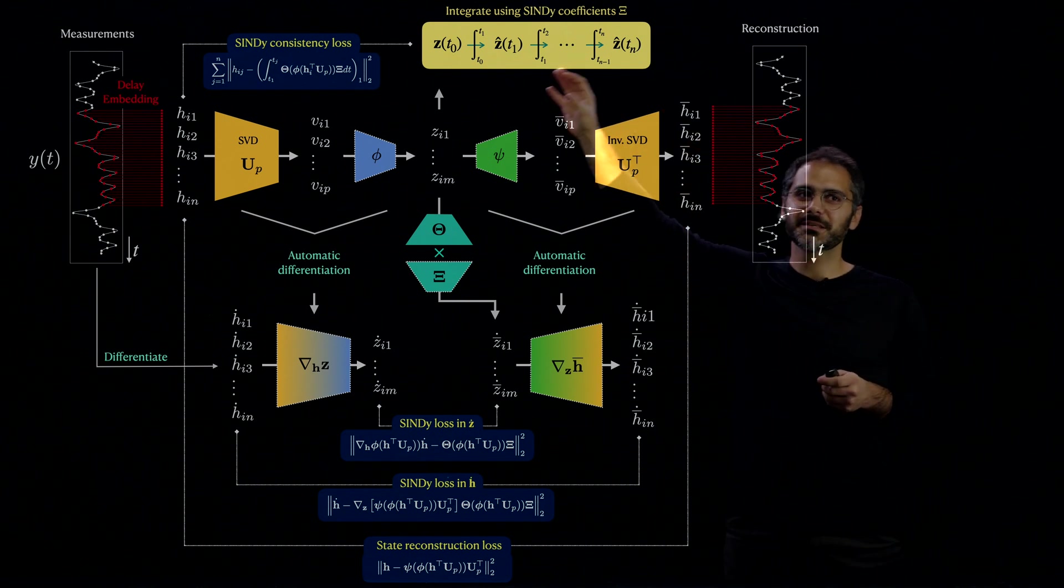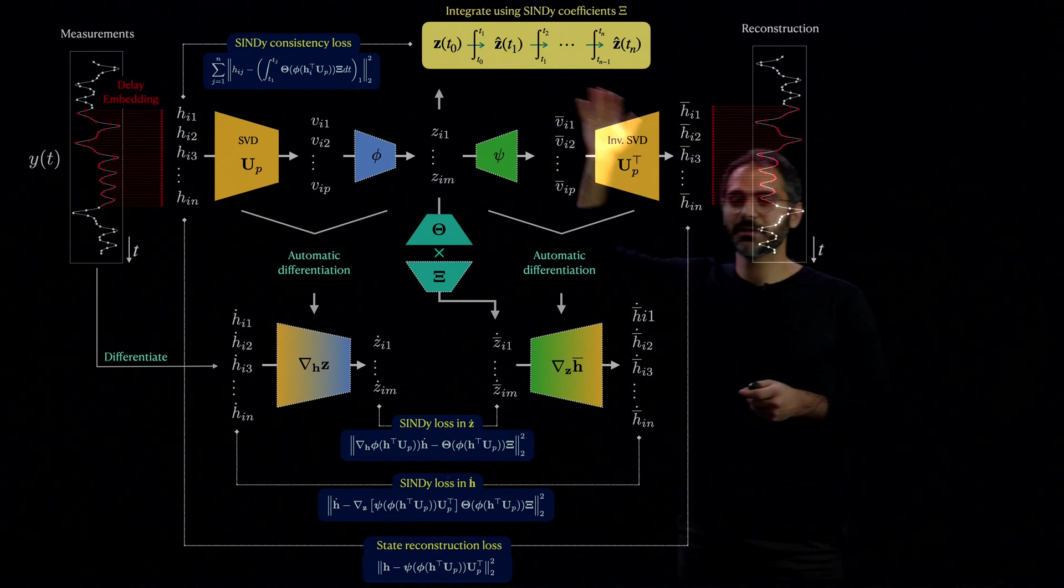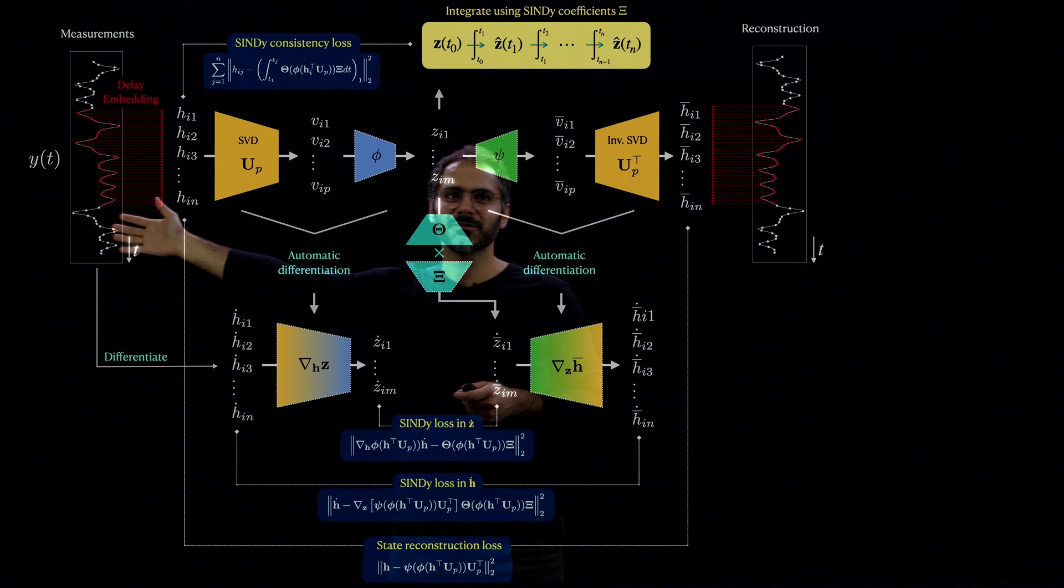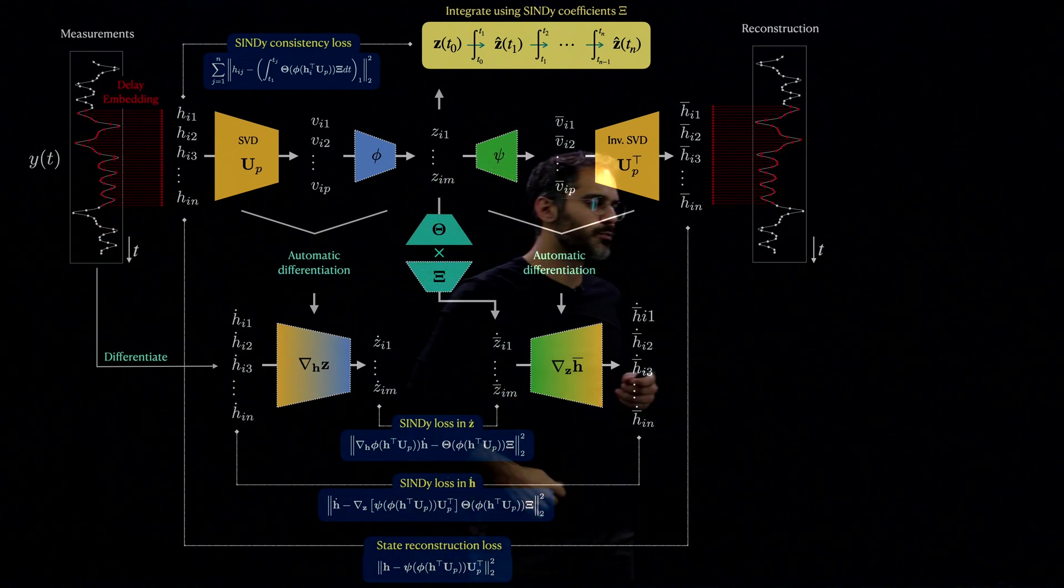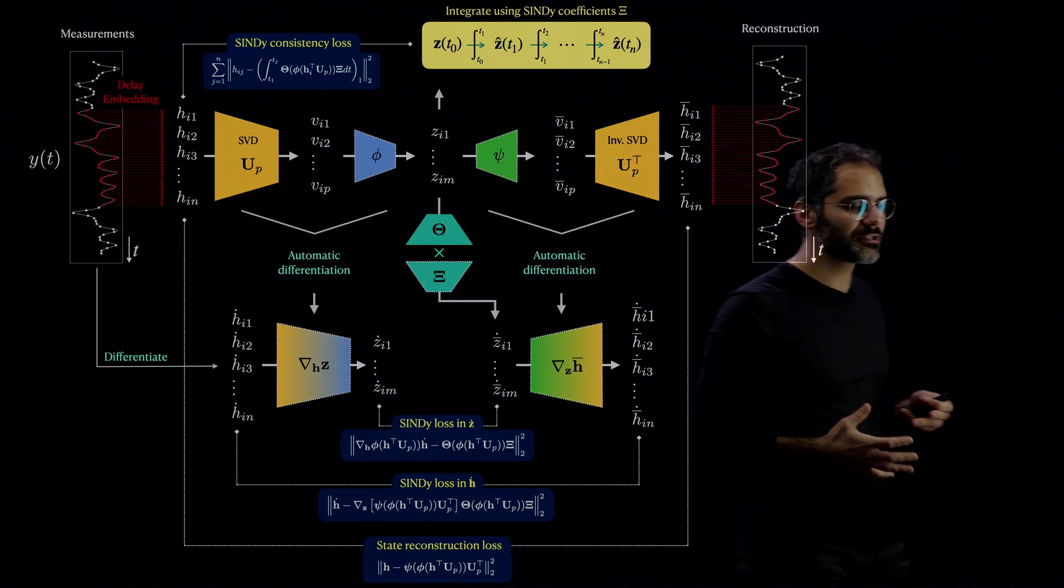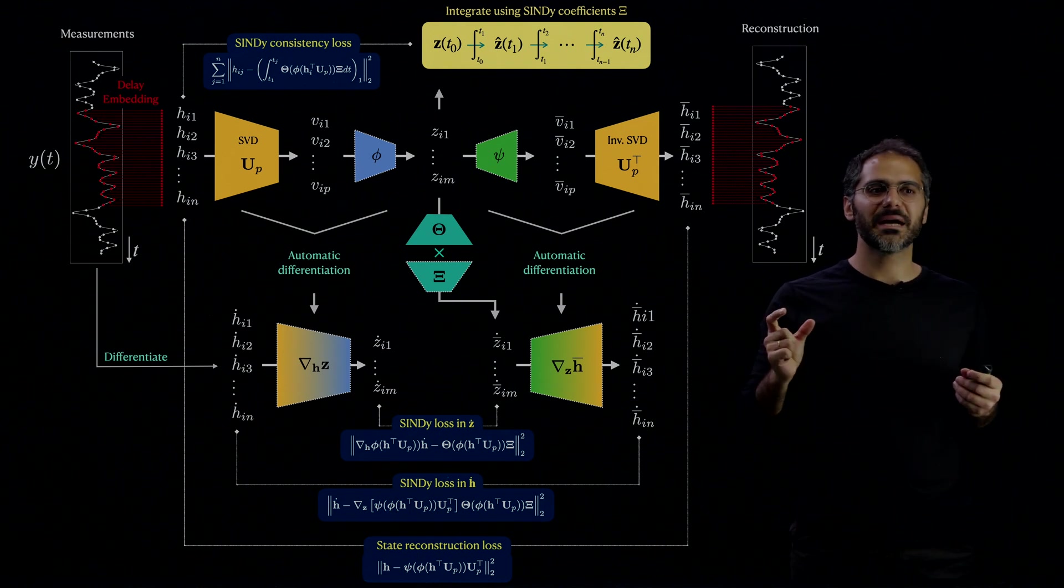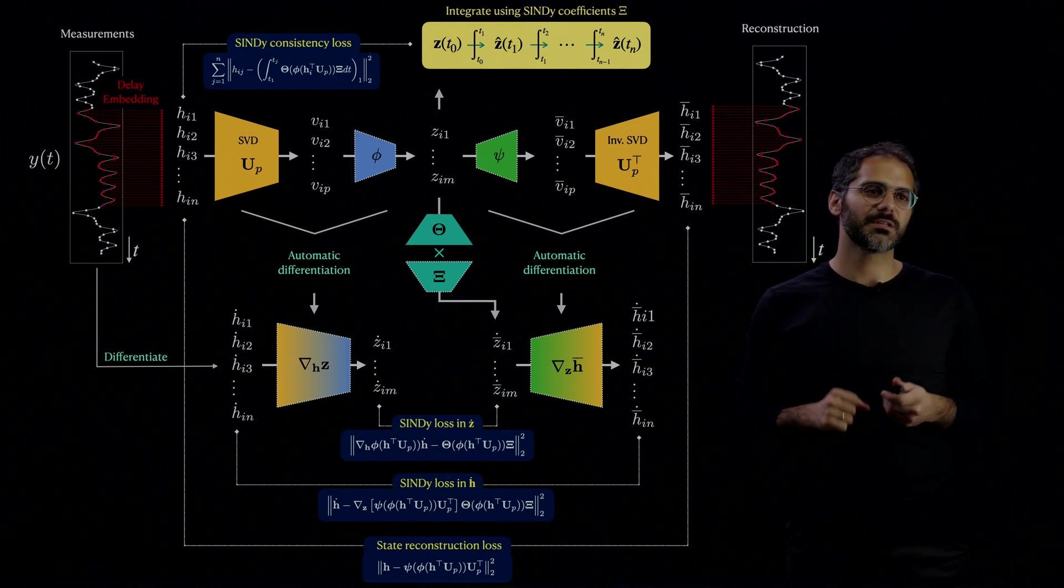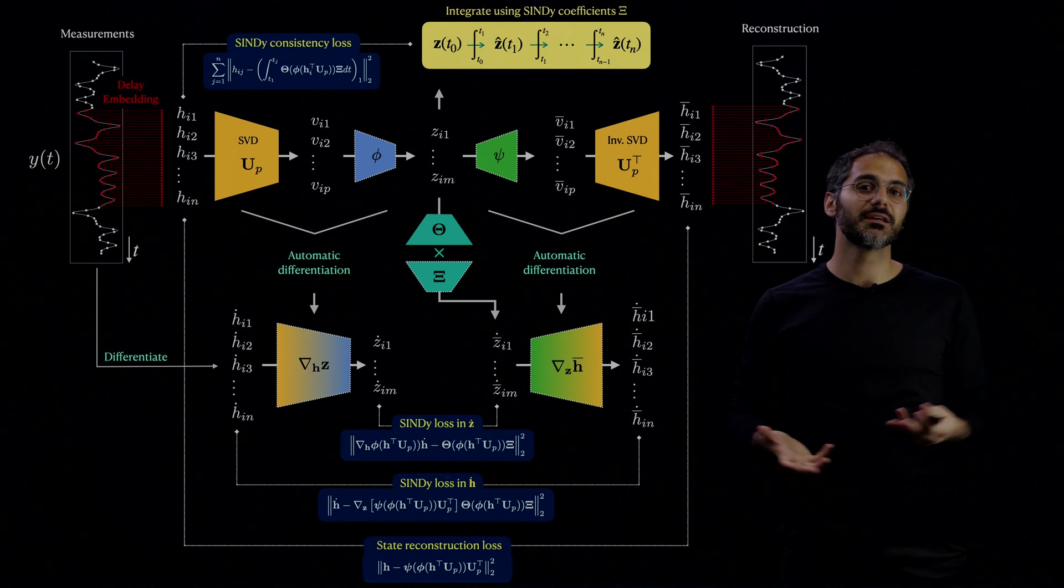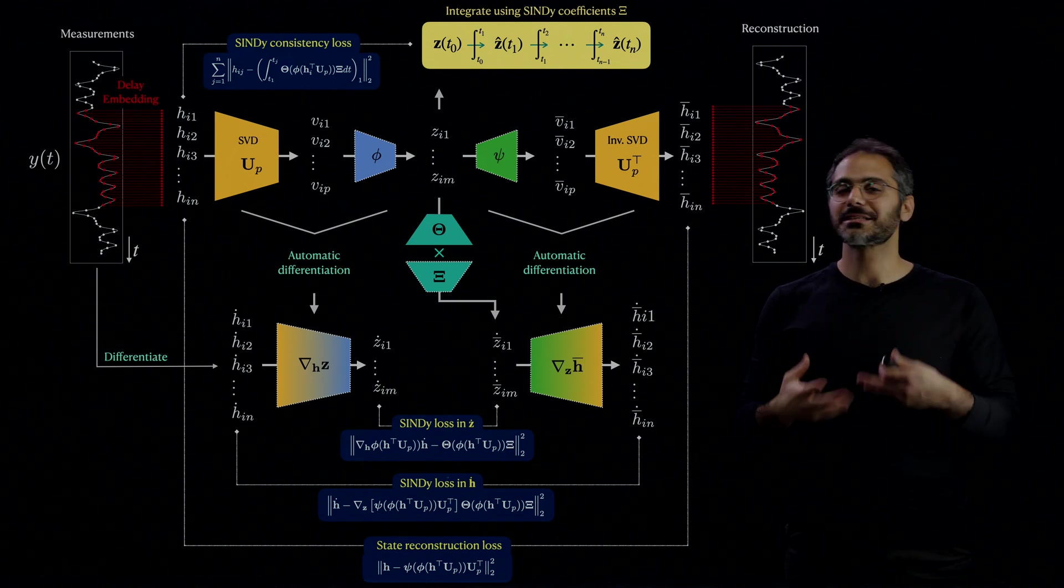And we want the first dimension of this solution to also be the input data. Which means that we would like our discovered model to have the first dimension match the input data that we're giving it. This is of course an assumption but it constrains our model even further to get something that makes sense.